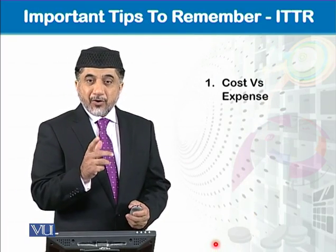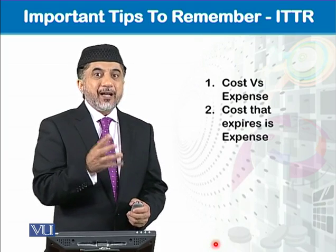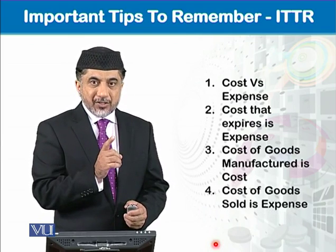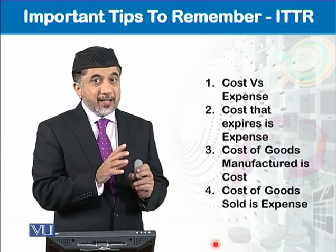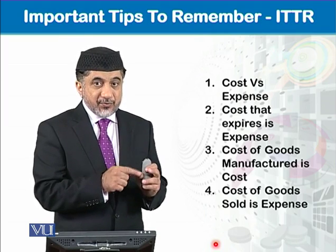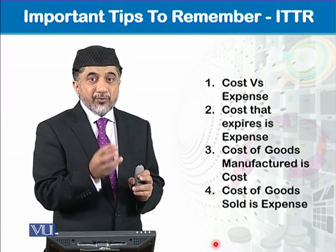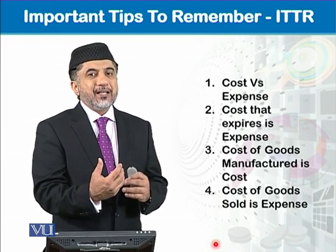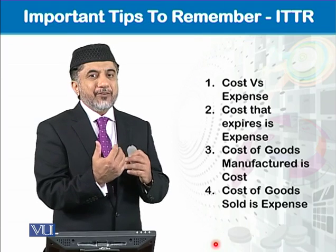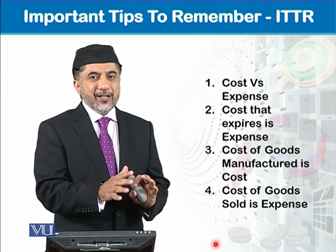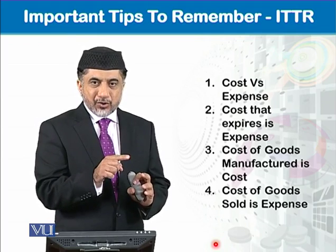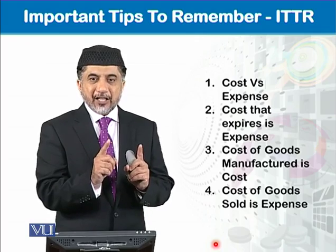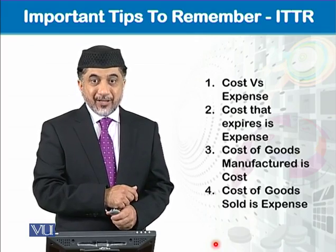An important distinction: there is a difference between cost and expense. A cost becomes an expense when it expires. The cost of goods manufactured is a cost because it has not expired — it is transferred to the trading account. When it is sold, its economic benefit transfers to the entity and it expires, becoming cost of goods sold, which is an expense. That is the difference between cost and expense.